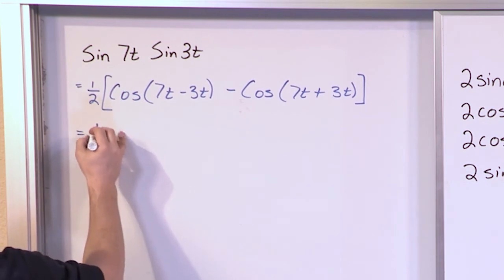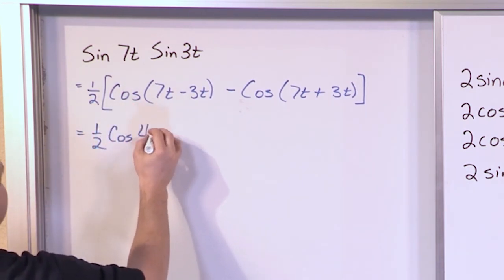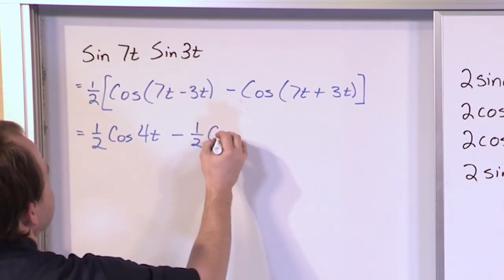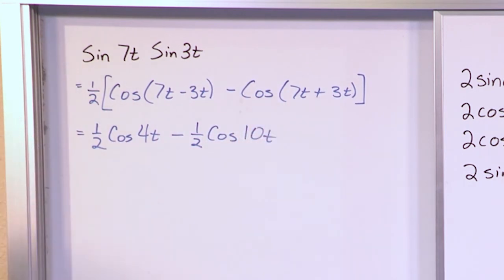And so it becomes 1 half cosine, 7 minus 3 is 4t. We have a 1 half going in there, so minus 1 half cosine, 7 plus 3, 10t. So 1 half cosine 4t minus 1 half cosine 10t, and that is the answer.